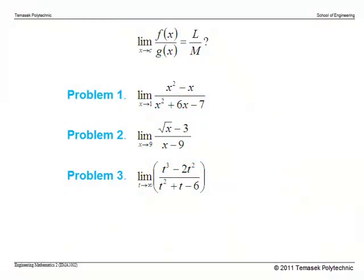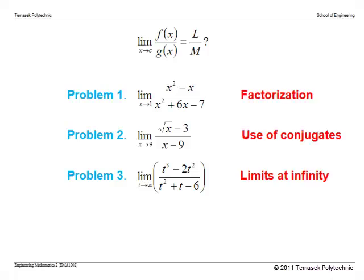In the Part 1 video, we mentioned that when we take the limit of quotients, sometimes the division rule cannot be used — meaning we cannot write the answer as L (the limit of f) divided by M (the limit of g) — because either M is 0 or L and M are not finite. Those were problems 1, 2, and 3, which we solved using factorization, conjugates, and limits at infinity. In this video, we look at a different type of problem, like problem 4, which cannot be solved using either of those methods.